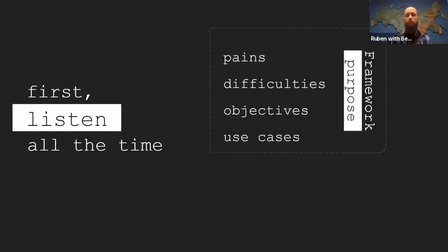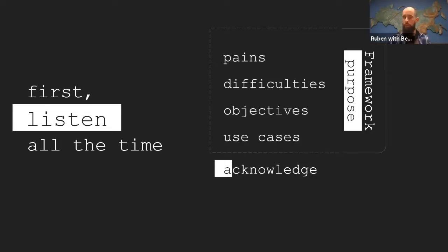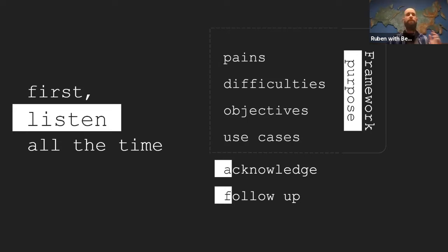Because this is an active process that you are constantly doing, something very relevant when dealing with other developers is that you should acknowledge. Acknowledge that you are hearing them and follow up on anything that you heard. If someone tells you about a problem or a pain, you acknowledge it, then once you solve it, you follow up and say: hey, we heard you, we solved it, it's here in this version. And in the context of a framework, this is absolutely crucial for the success of the framework.